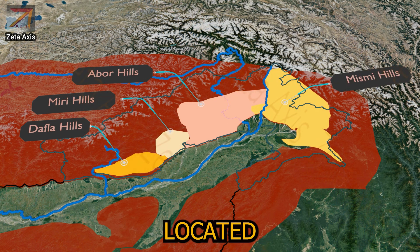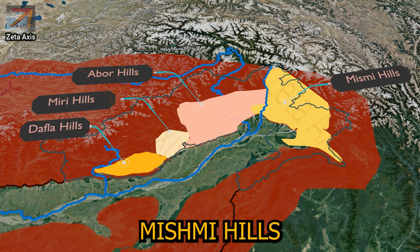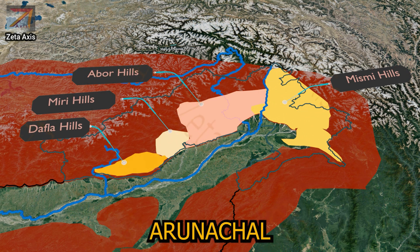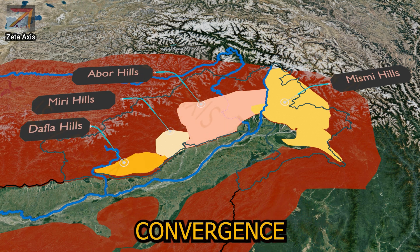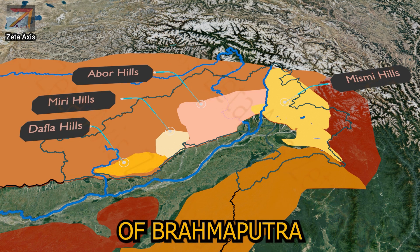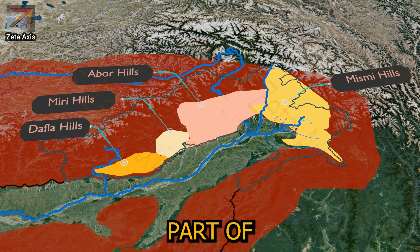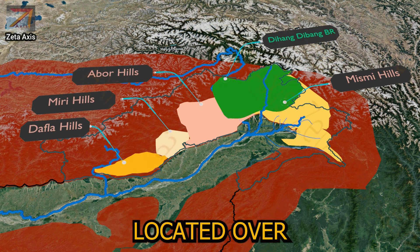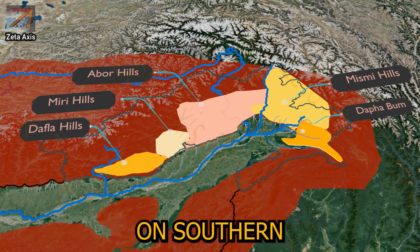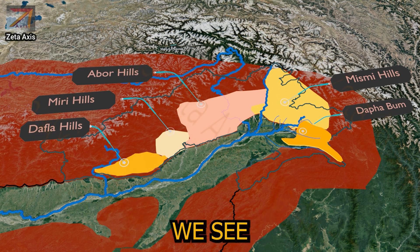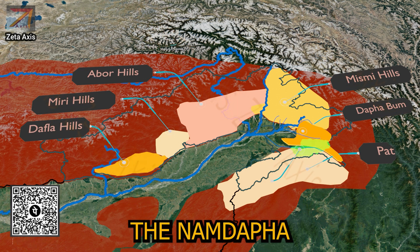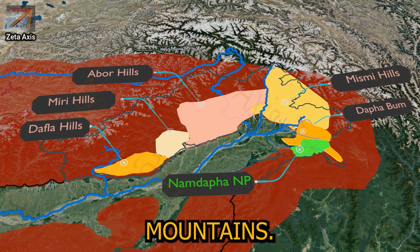Mismi hills are located east of Abhor hills, at the northeastern tip of India in northeastern Arunachal Pradesh. The Mismi hills form a convergence zone of the Himalayas and Purwanchal ranges. A large number of Brahmaputra tributaries flow through Mismi hills, and part of the Dihang-Dibang Biosphere Reserve is located here. Dafabam is a sub-range on the southern margin of Mismi hills, where Mismi hills merge into the Patkai Bum. The Namdapha National Park is located in the foothills of these mountains.